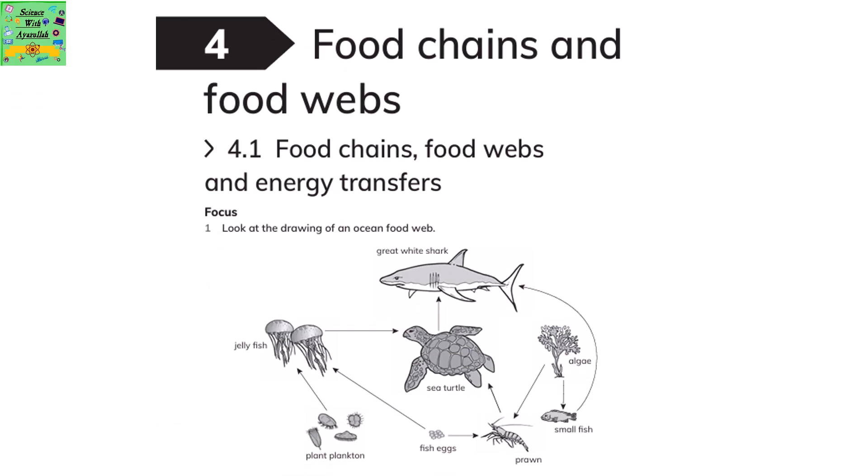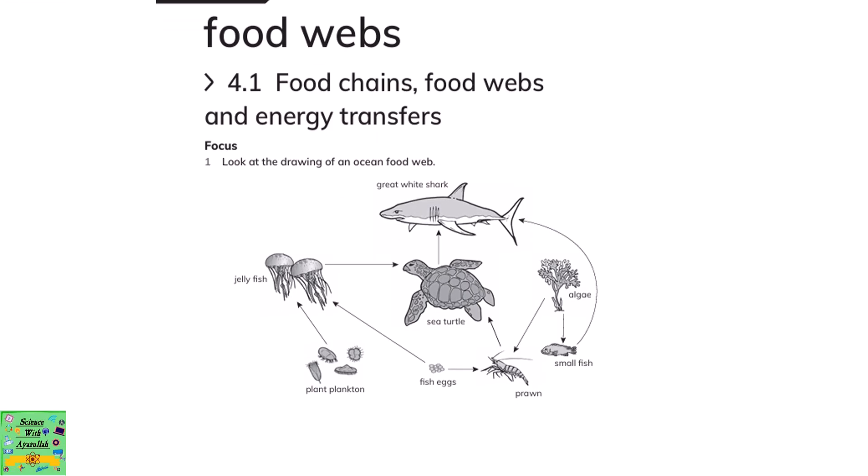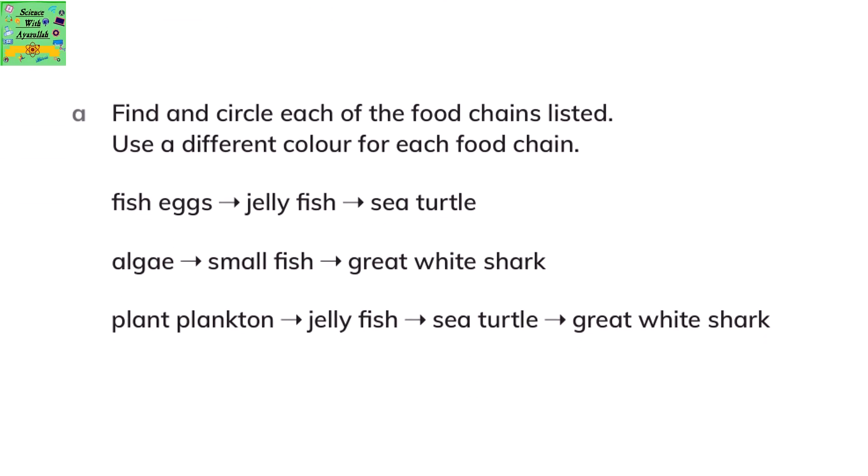Food chains and food webs. Look at the drawing of an ocean food web. Find and circle each of the food chains listed, using a different color for each food chain.